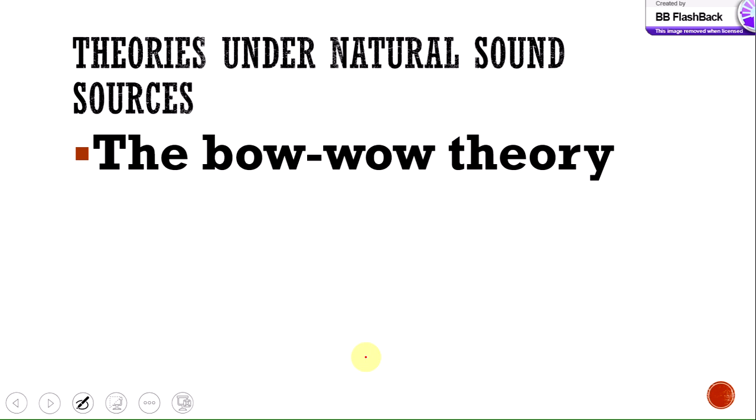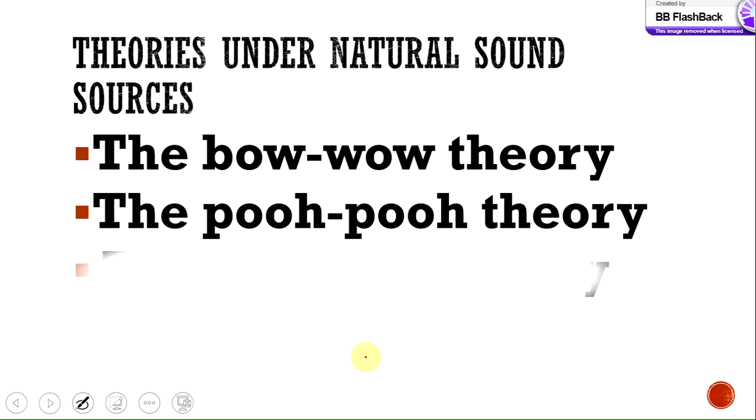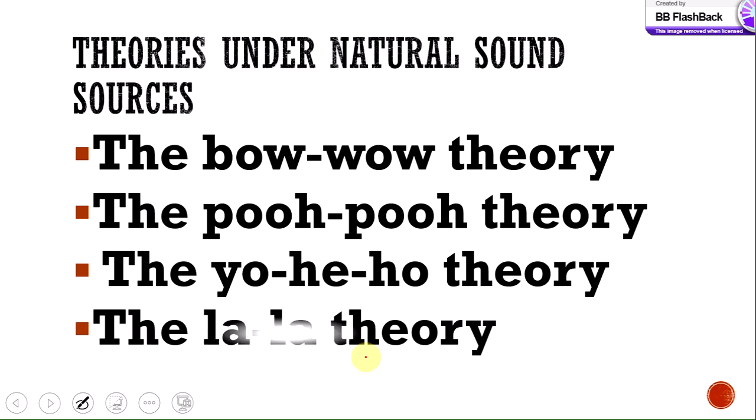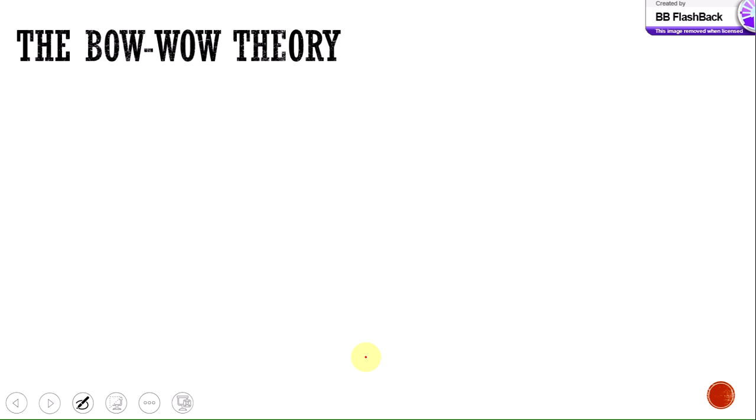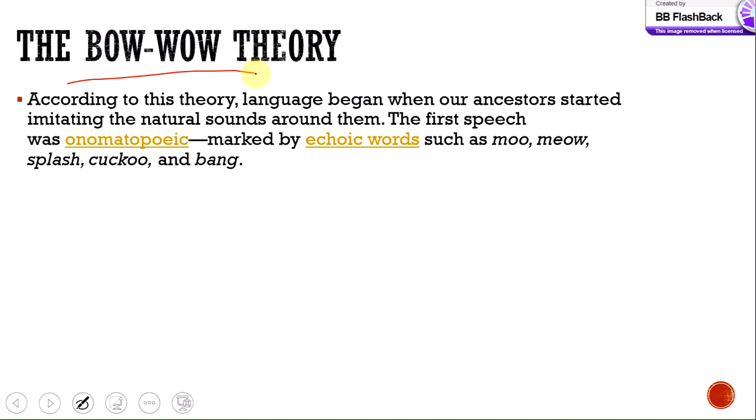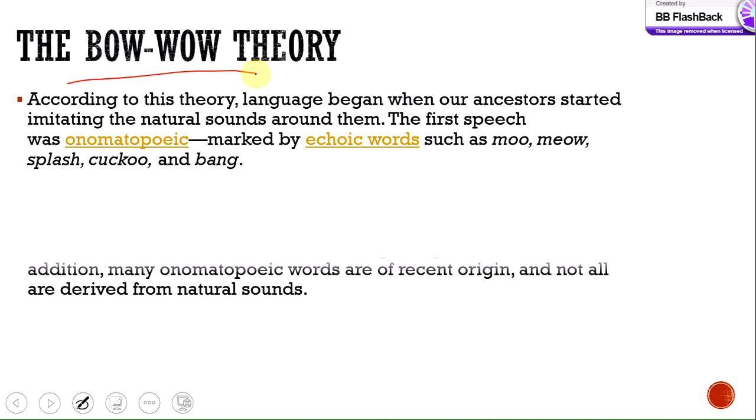The theories under natural sound sources are: the Bow-wow Theory, the Pooh-pooh Theory, the Yo-he-ho Theory, and the La-la Theory. The Bow-wow Theory states that language began when our ancestors started imitating the natural sounds around them. The first speech was onomatopoeic, marked by echoic words such as 'moo,' 'meow,' 'splash,' 'cuckoo,' and 'bang' — language initiated by imitation of natural sounds.